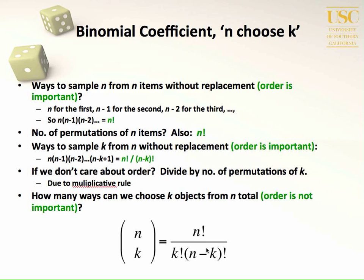The binomial coefficient is made up of factorial terms: n factorial divided by k factorial times n minus k factorial. As a refresher, n factorial means n times n minus 1 times n minus 2, and so on. N factorial describes the number of permutations — the number of ways we can permute n items, or how many different orderings of n we can get.